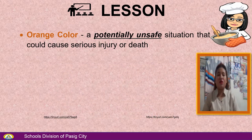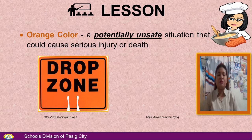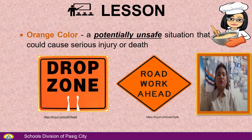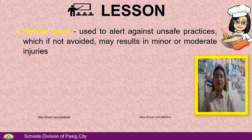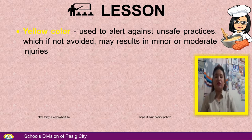Orange color indicates a potentially unsafe situation that could cause serious injury or death — for example, draft zone or road work ahead. Yellow color is used to alert against unsafe practices which, if not avoided, may result in minor or moderate injuries.